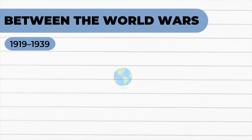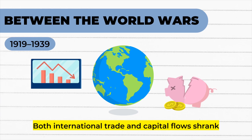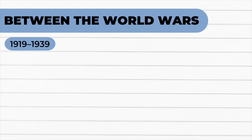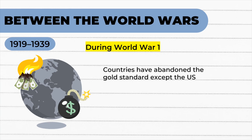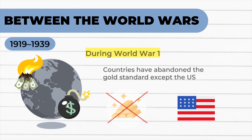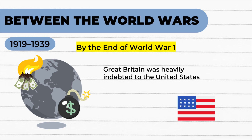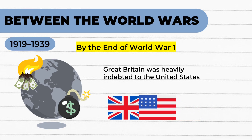Number 3: Between the world wars. In this era, both international trade and capital flows shrank compared to the period before World War I. During World War I, countries had abandoned the gold standard, except for the United States, and they later returned to it only briefly. By the end of World War I, Great Britain was heavily indebted to the United States, allowing the US to displace it as the world's foremost financial power.